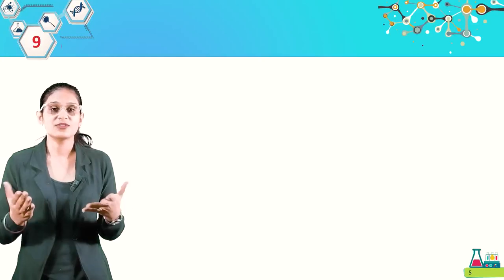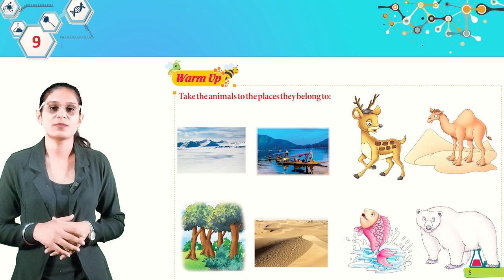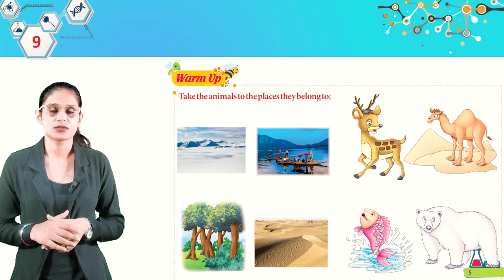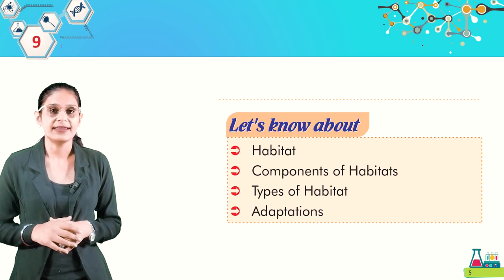Welcome to the class, students. Today we are going to discuss Chapter 9, Organisms and Their Surroundings. Let's warm up. Take the animals to the place they belong to. Look at this picture — you have to take the animal to their habitat. Today we will learn about habitat, components of habitat, types of habitat, and adaptations.